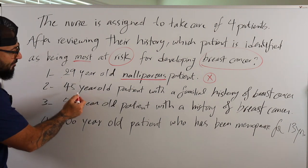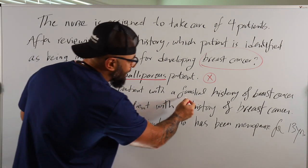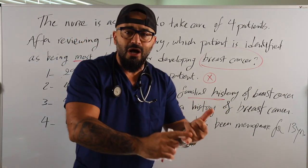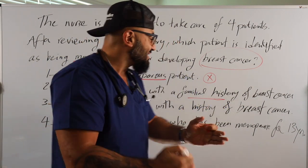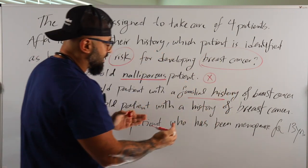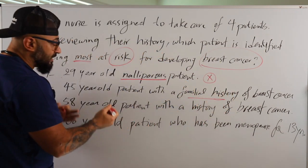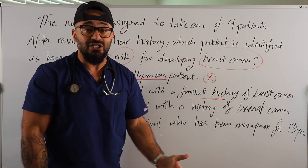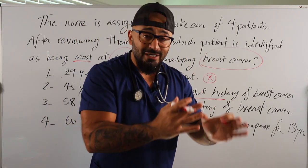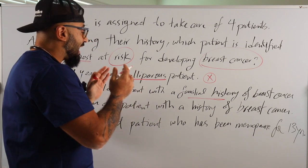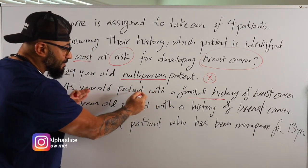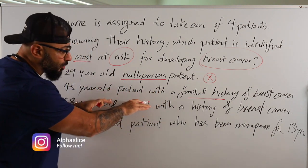Option number two: a 45-year-old patient with a familial history — maybe their grandma, sister, or mother had breast cancer in the family. Definitely this is a risk for breast cancer. If you had a familial history of breast cancer, you're at a higher risk. I'm going to keep this option but look at the others — maybe there's something with a higher risk.